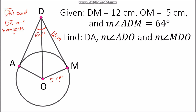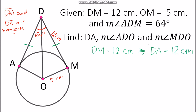We need to find the measurements of DA, angle ADO, and angle MDO. First, we can find the measurement of segment DA using segment DM. Since the tangent segments theorem states that tangent segments from an external point are congruent, if segment DM equals 12 cm, then segment DA also equals 12 cm.